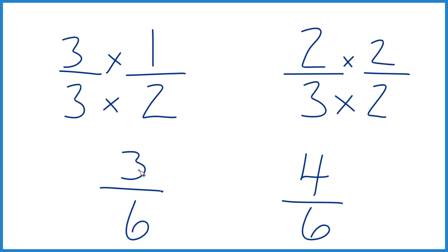Same denominator, compare the numerators. You can see four-sixths, that's bigger than three-sixths. Four is bigger than three, same denominator. So two-thirds of a cup, that's larger than one-half of a cup.